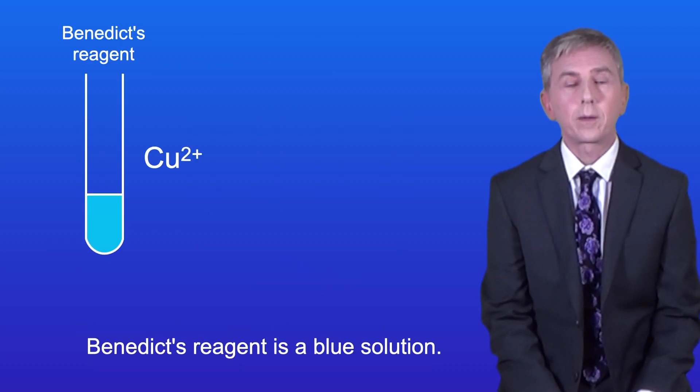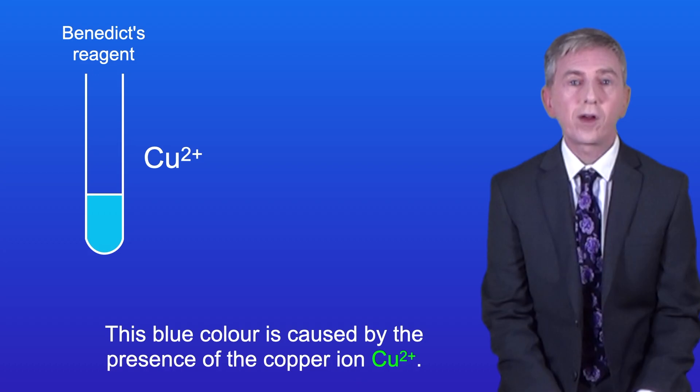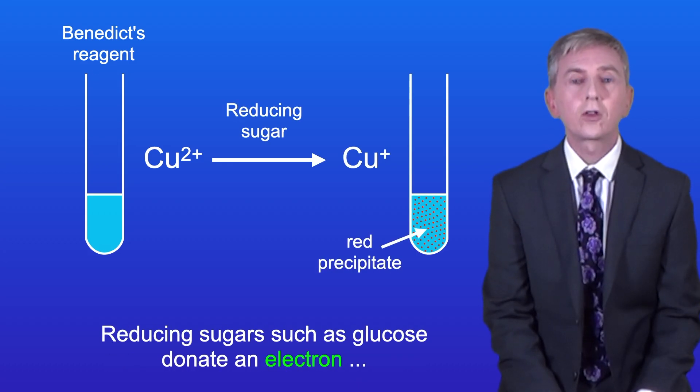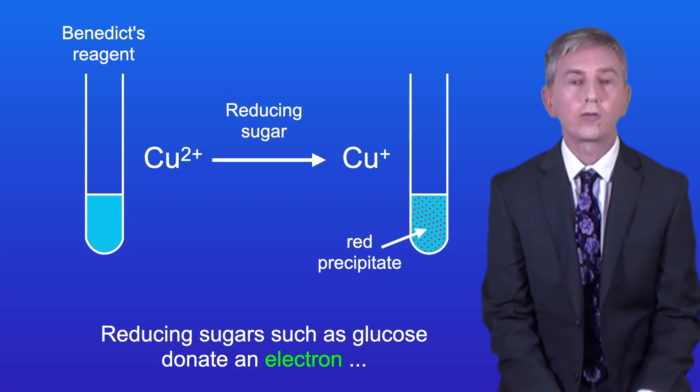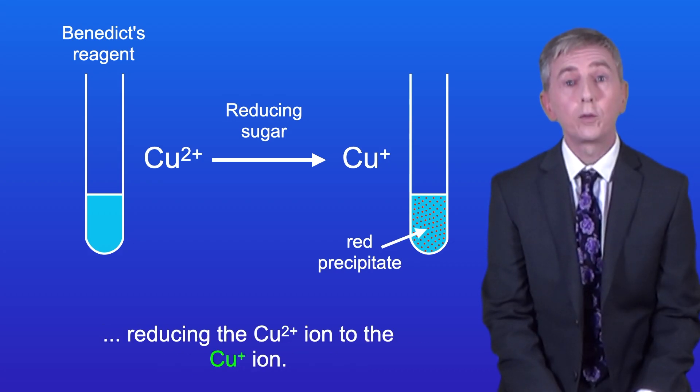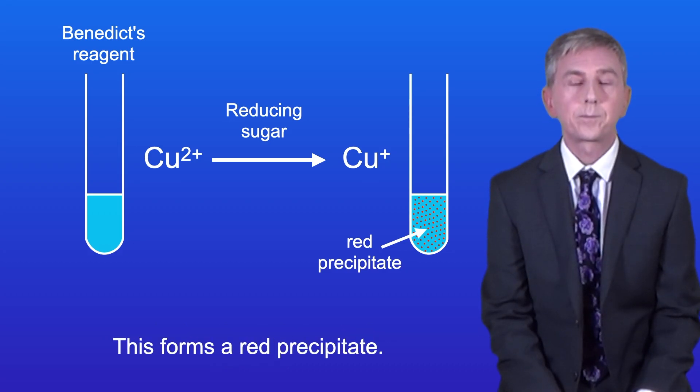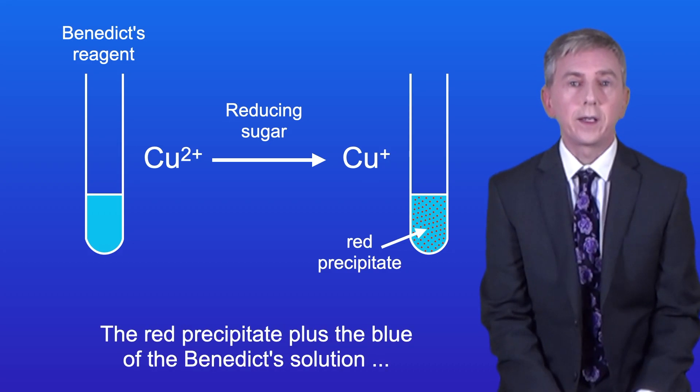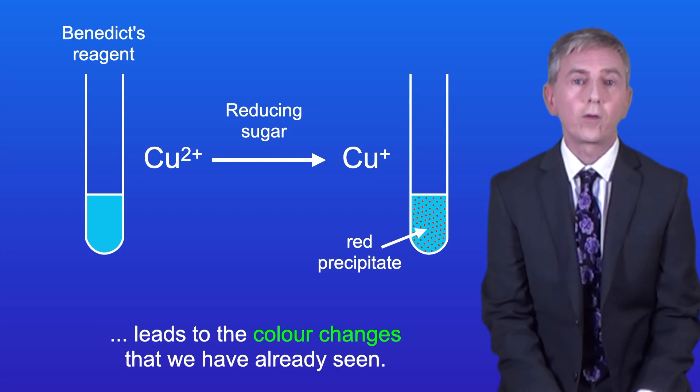Benedict's reagent is a blue solution, and this blue color is caused by the presence of the copper ion Cu2+. Reducing sugar such as glucose donate an electron, reducing the Cu2+ ion to the Cu+ ion. And this forms a red precipitate. The red precipitate plus the blue of the Benedict's solution leads to the color changes that we've already seen.